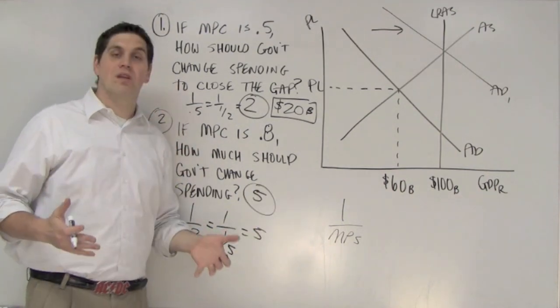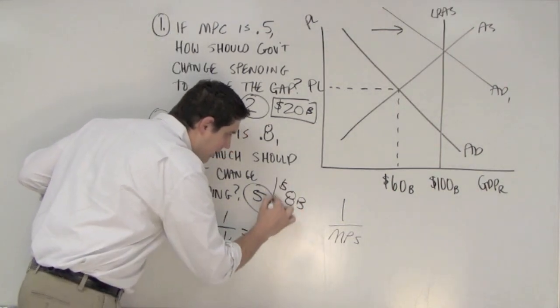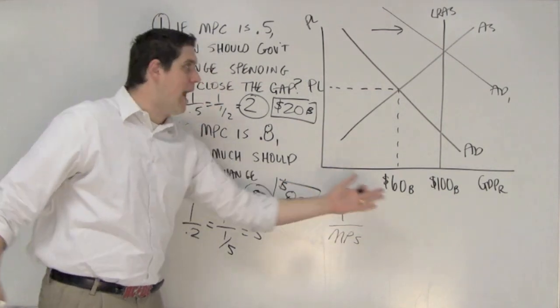How much do we need to spend to close the gap? We need to spend 8 billion dollars. You spend 8 billion dollars, that's multiplied times 5, and that closed a 40 billion dollar gap.